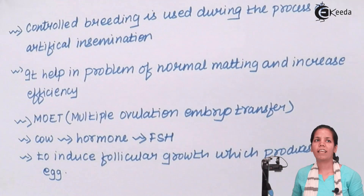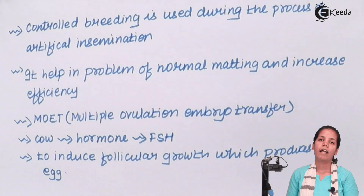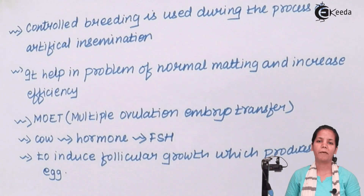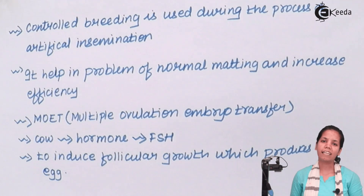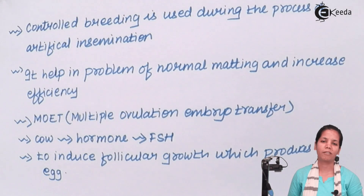In this part of the chapter, we covered inter-specific hybridization and how it has had a great impact on the production of cattle and increasing their productivity. I hope you are very clear with this concept.